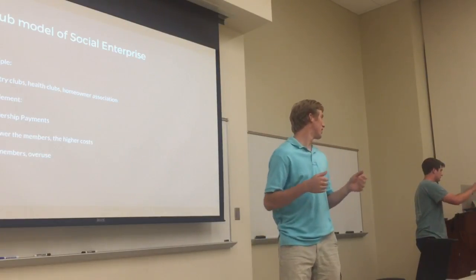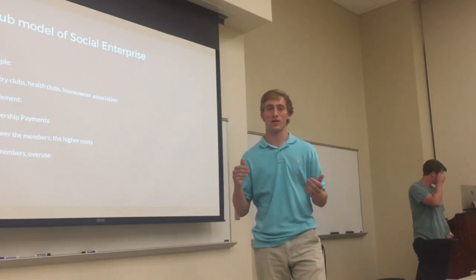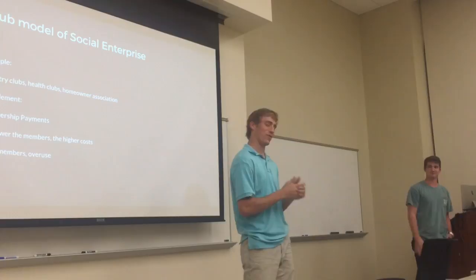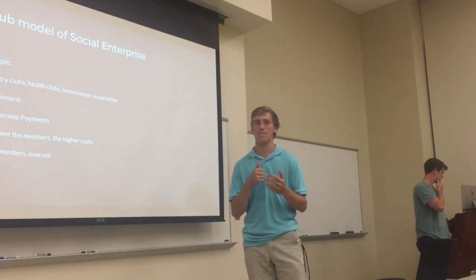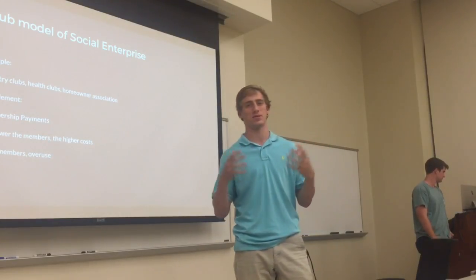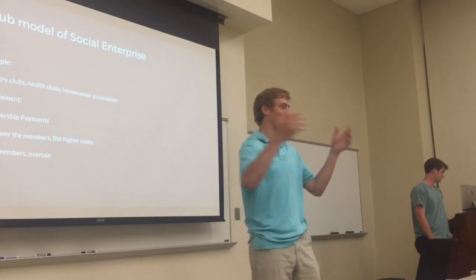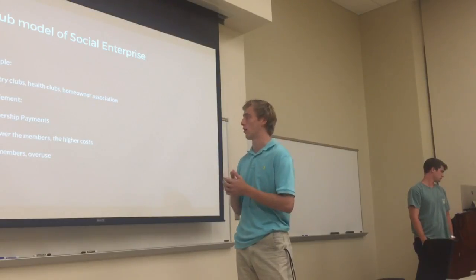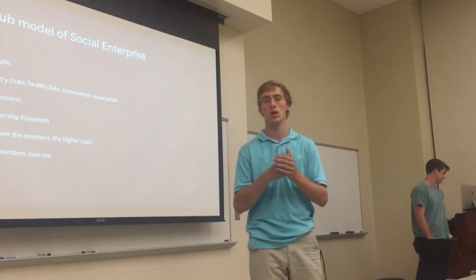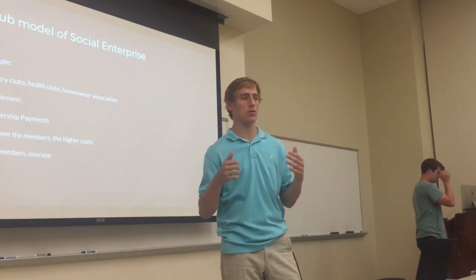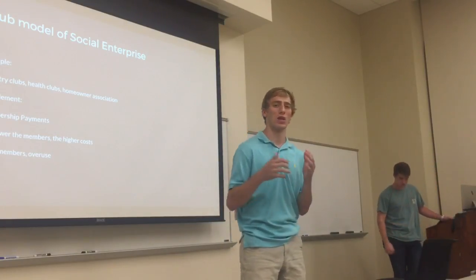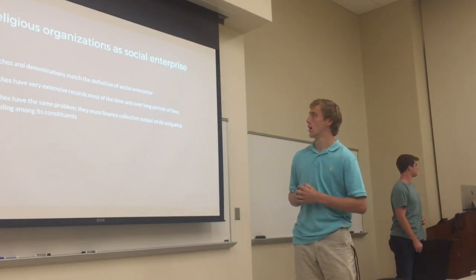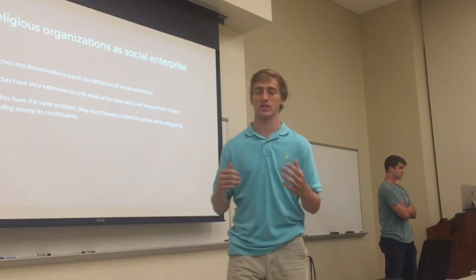Examples of the club model include country clubs, health clubs, homeowners associations, fraternities, and sororities. The biggest key is the payments that set it apart — this is how a membership starts. You have to have the payment to distinguish them from public goods or private industries. A few things that affect this: fewer members means higher cost; more members leads to overuse. But more engaged members means higher value, and less engaged members means lower value.